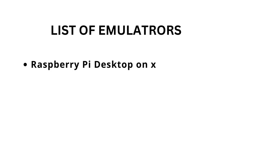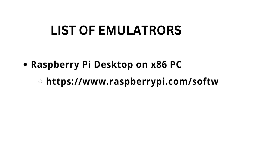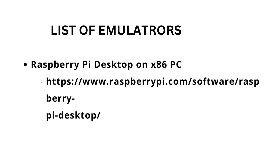The last one is Raspberry Pi Desktop on a 32-bit PC. Raspberry Pi OS for x86 is a version of Raspberry Pi OS that can be run on a regular PC. While it is not an emulator, it allows you to run Raspberry Pi compatible software on a standard computer, which can be helpful for development and testing. You can check it out by visiting the raspberrypi.com website.